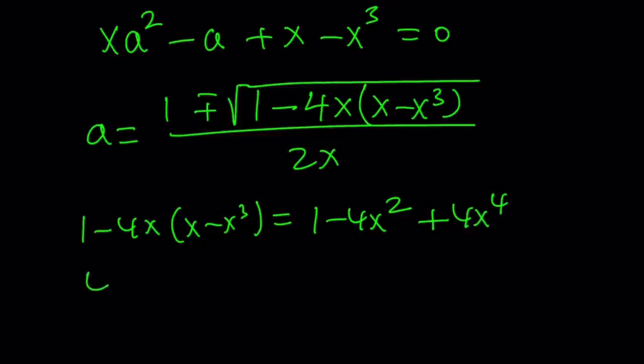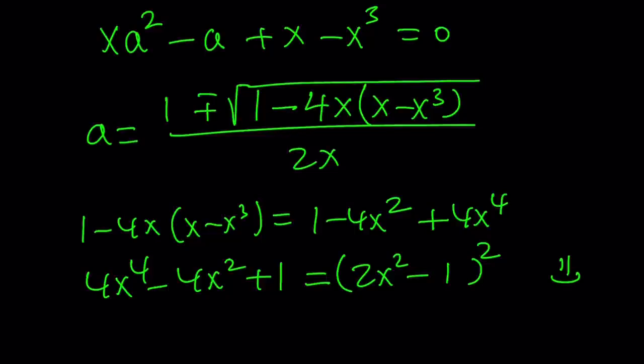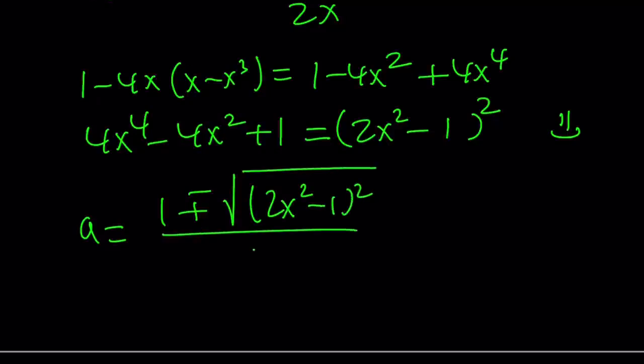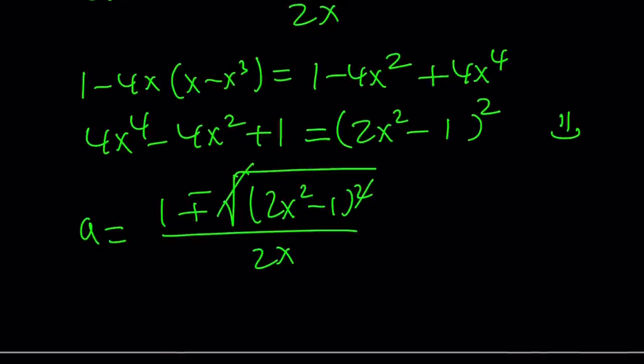It's going to be 1 minus 4x squared plus 4x to the fourth power. This may not look like a good thing, but notice we can write it like this. If you're familiar with some basic algebra formulas, you're going to notice that this is 2x squared minus 1 quantity squared. That's nice because we have a perfect square inside the radical, which is perfect.